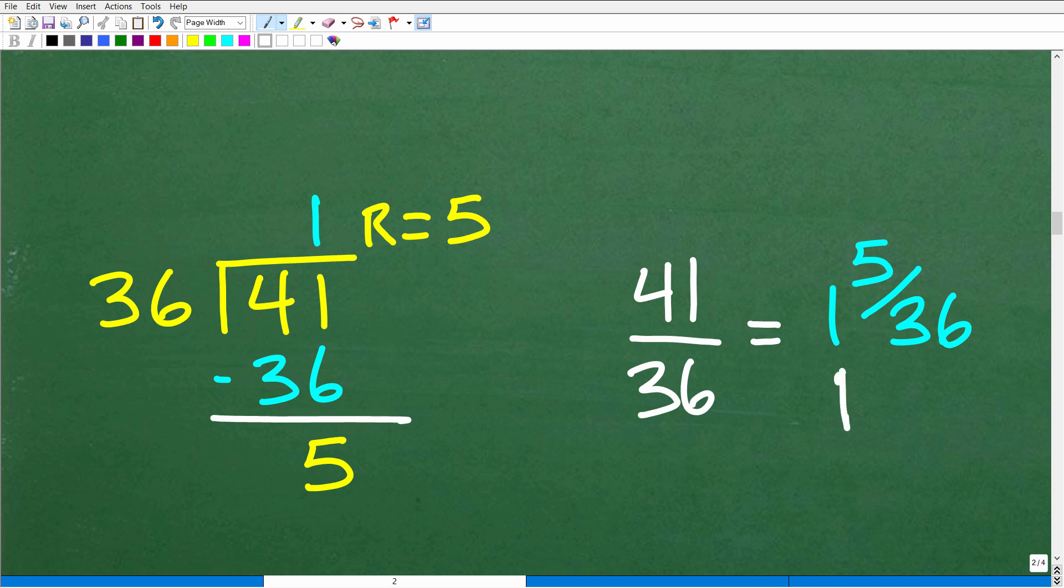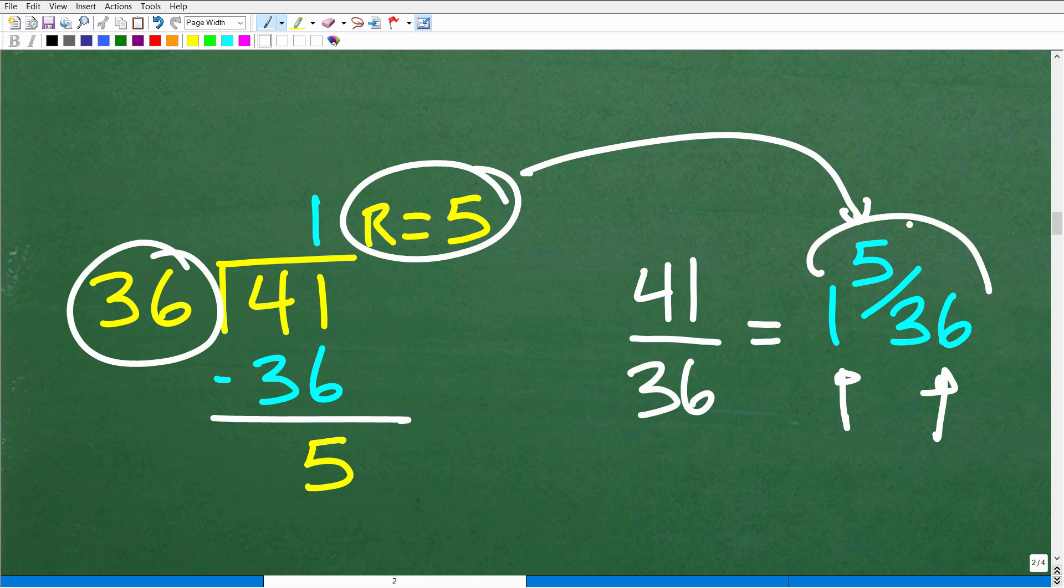So we write that as 1, and our remainder becomes our numerator, and our 36 here is our denominator. So that's 1 and 5/36.